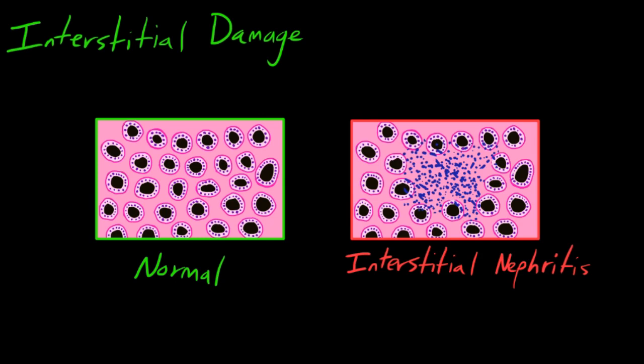I've added a picture that represents interstitial nephritis. As we can see, there are many inflammatory cells that have now moved to the interstitial space. They've pushed tubules aside and caused a big inflammatory response, disrupting the normal architecture inside the kidney. This inflammation is taking place in between the tubules and glomeruli, and it causes acute kidney injury.